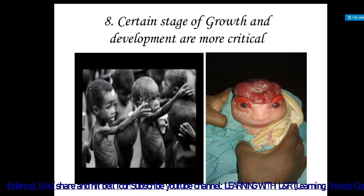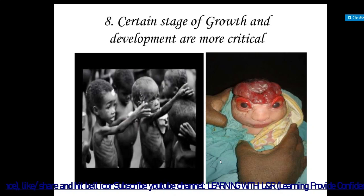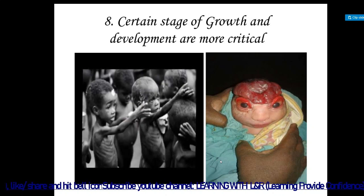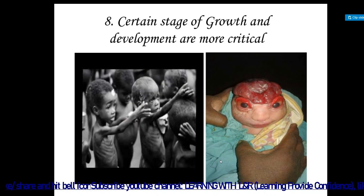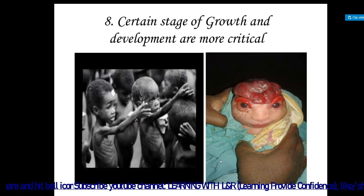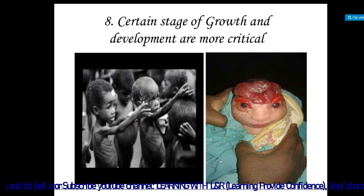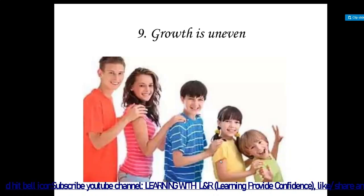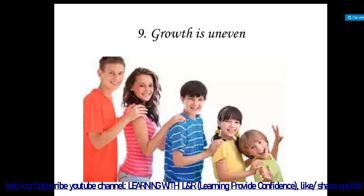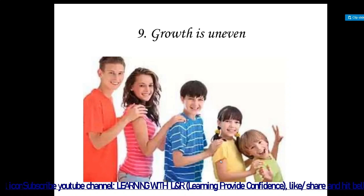Certain stages of growth and development are more critical. If a child is born with a chromosomal abnormality or other critical conditions, or in cases of malnutrition, those things have a very bad effect on the growth and development of the child.